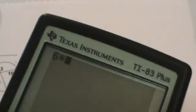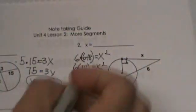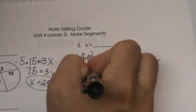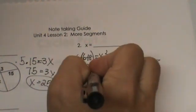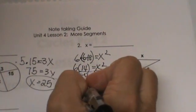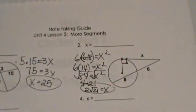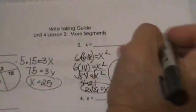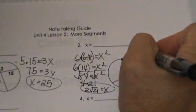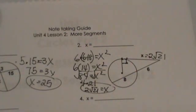6 times 14, yeah 84 equals x squared. Then we have to take the square root of both sides, so that is 4 times 21, which is 2√21. That is the value of x or the length of our tangent up here. So there are the first two.